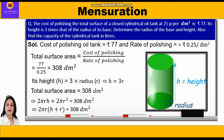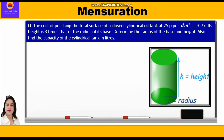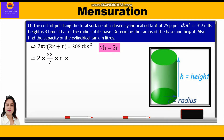Substituting h = 3r, we get 2πr(3r + r) = 308. Since 3r + r = 4r, we write 2 × (22/7) × r × 4r = 308. So r × r = r², and 2 × 4 = 8, giving us 8 × (22/7) × r² = 308.